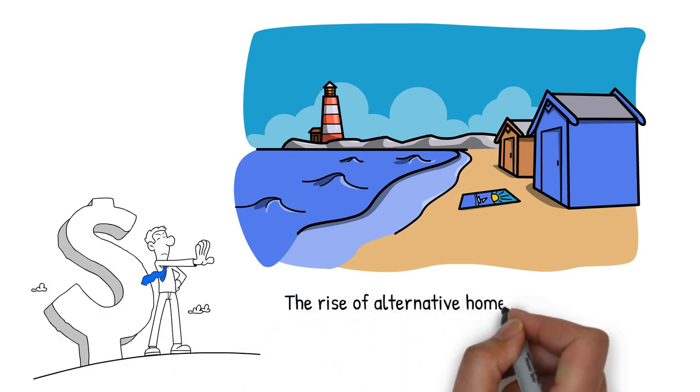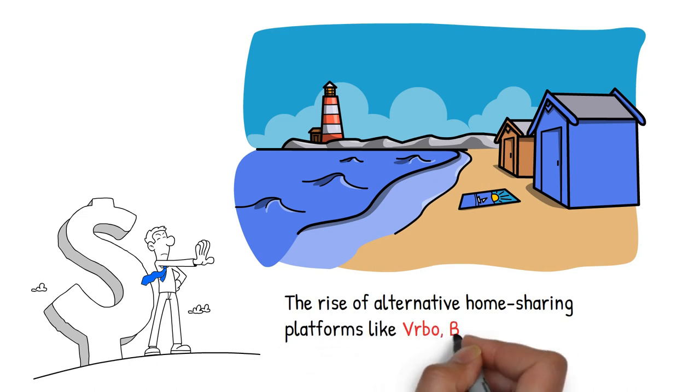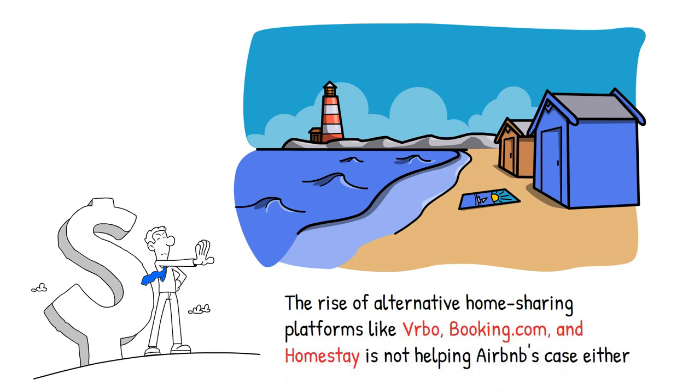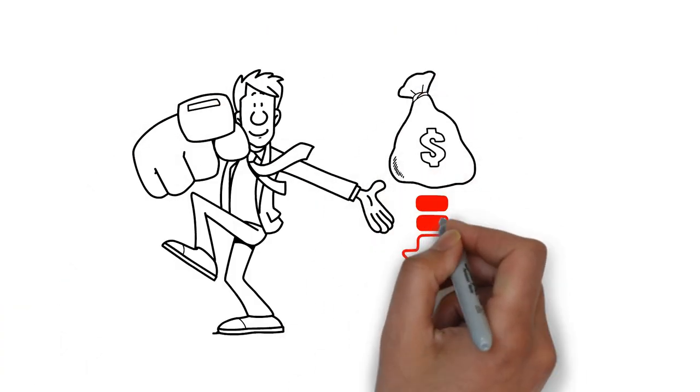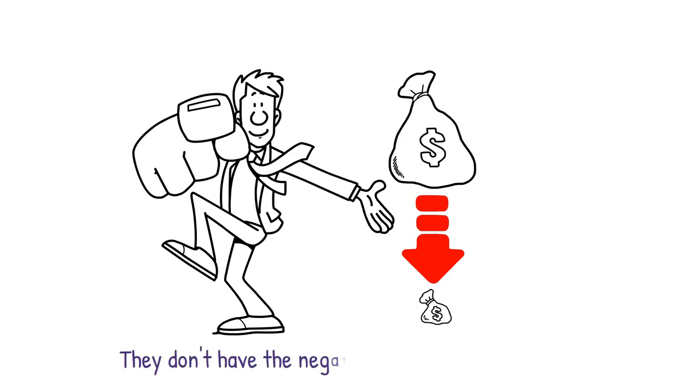The rise of alternative home-sharing platforms like Vrbo, Booking.com, and Homestay is not helping Airbnb's case either. However, these platforms offer more affordable options and are more transparent about their fees. Plus, they don't have the negative reputation that Airbnb now has.